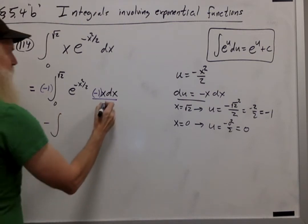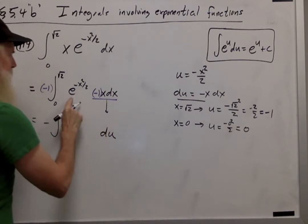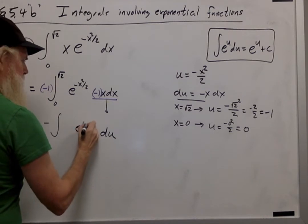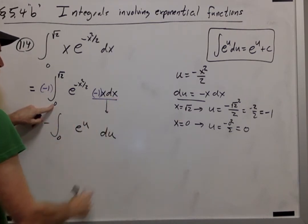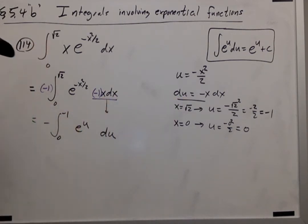And now translating, negative x dx is the same as du. e to the negative x squared over 2 is e to the u. When x equals 0, u also equals 0. When x equals square root of 2, u equals negative 1. So I have negative the integral from 0 to negative 1, e to the u du.